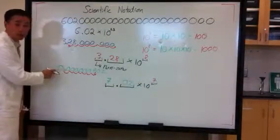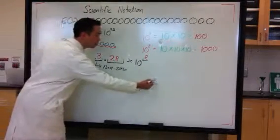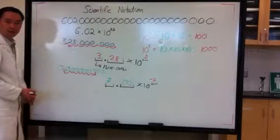However, this is a smaller number. It's less than 1. Because it's a small number, we place a negative in front of the exponent.